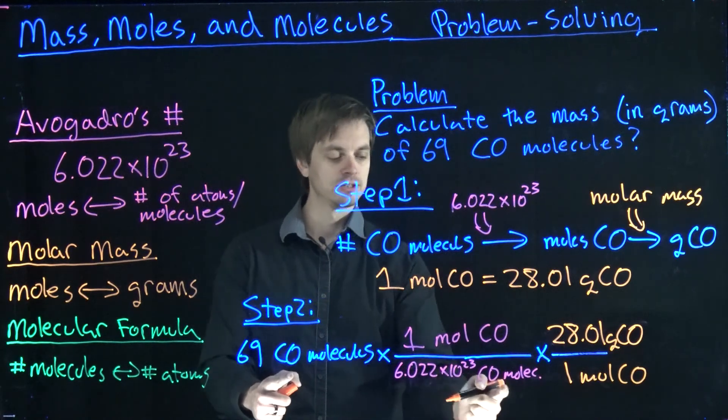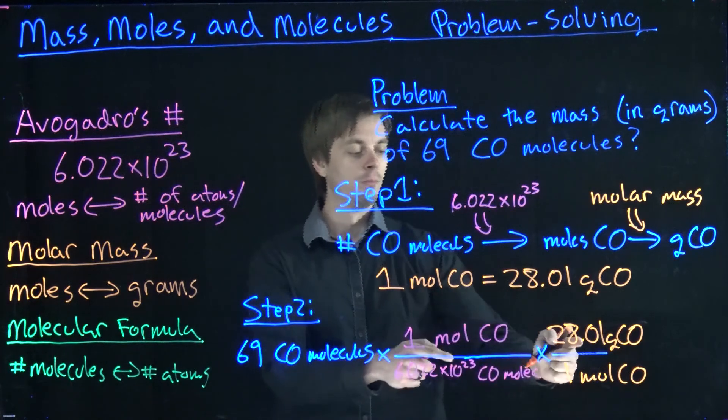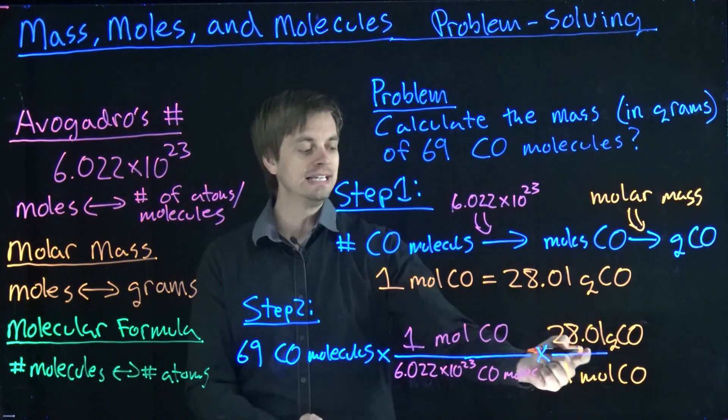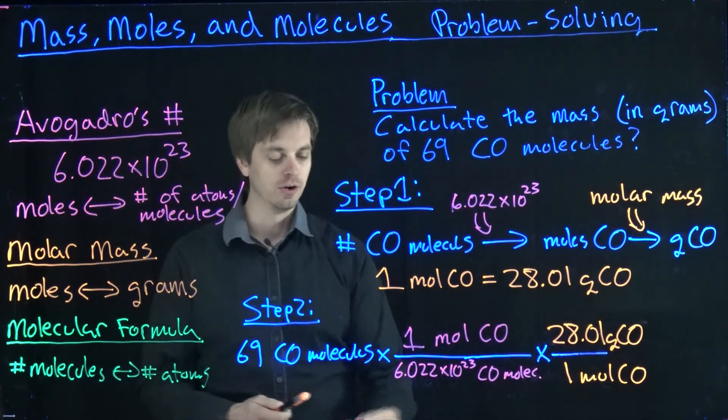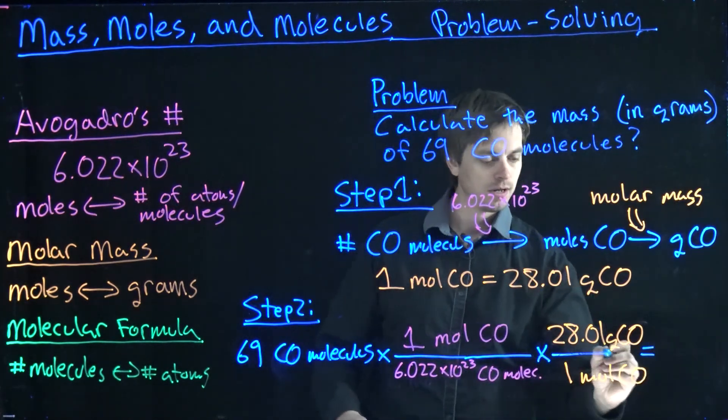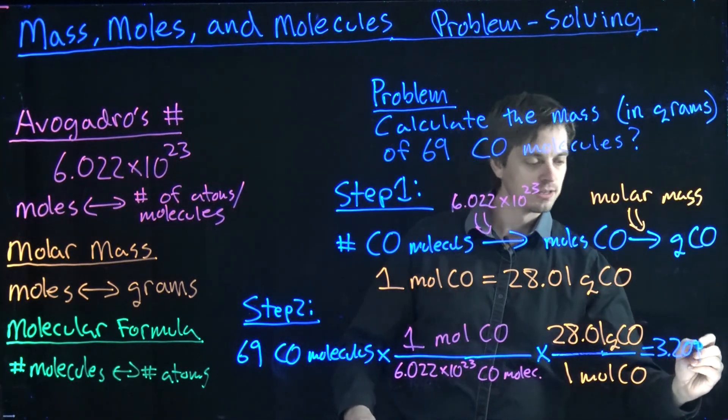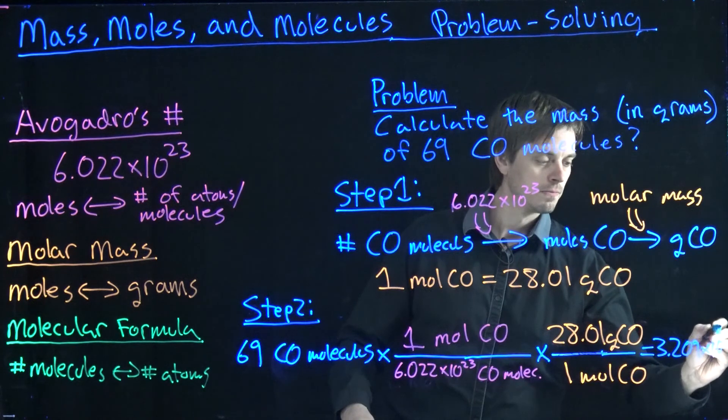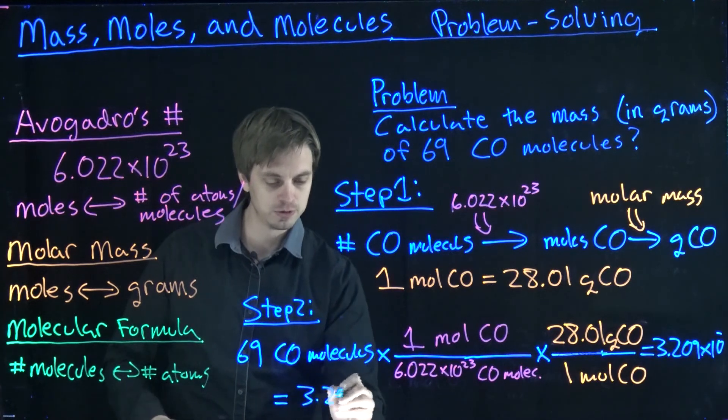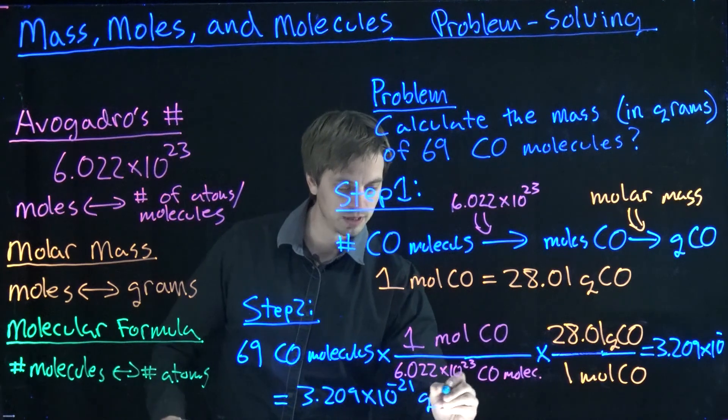So, now CO molecules cancels out with CO molecules down here. We're left with units of moles of CO. Multiplying by the molar mass cancels out the units of moles of CO and leaves us with units of grams of CO. So, if you carry this out, you should obtain a final answer that's roughly 3.209 times 10 to the minus 21 grams of CO.